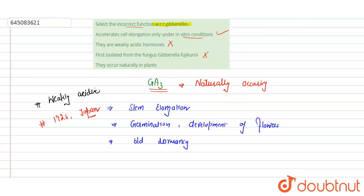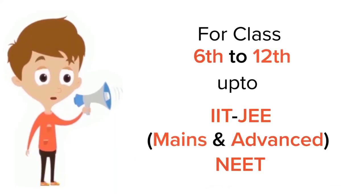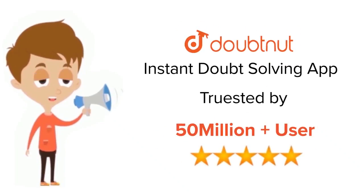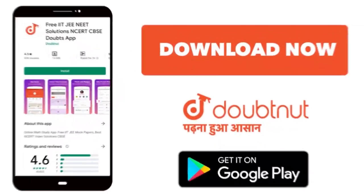And they are naturally occurring in plants, we have already seen that. So option A is correct here. Hope you get it, thank you. For class 6 to 12, IIT JEE and NEET level, trusted by more than 5 crore students, download Doubtnut app today.